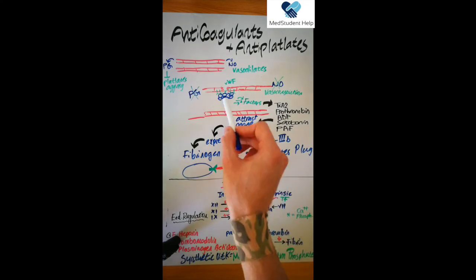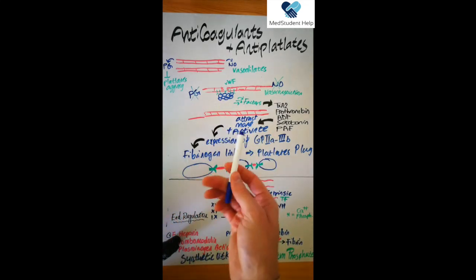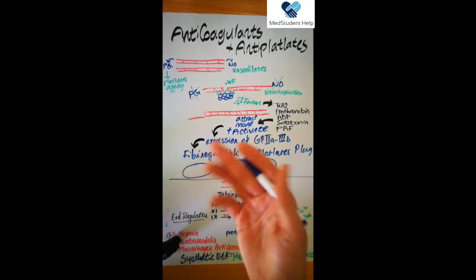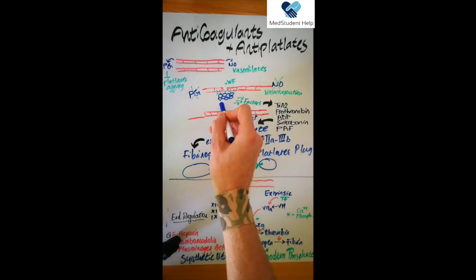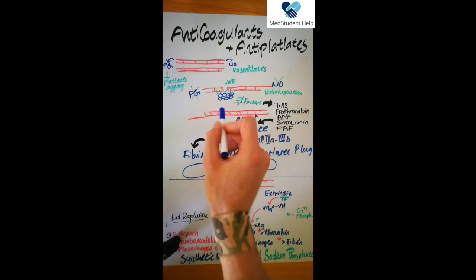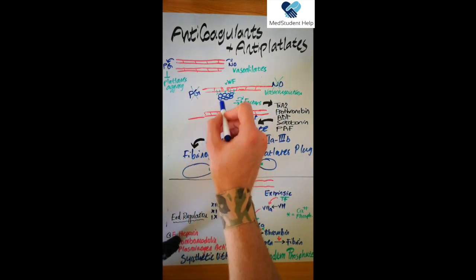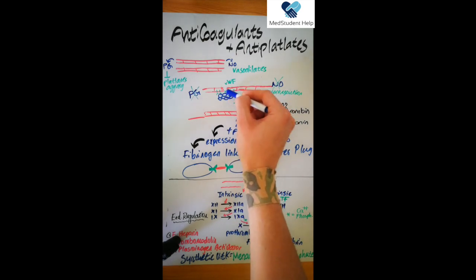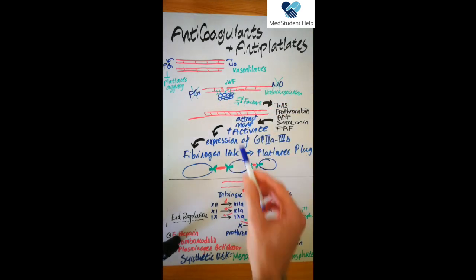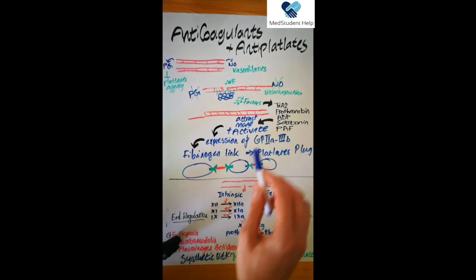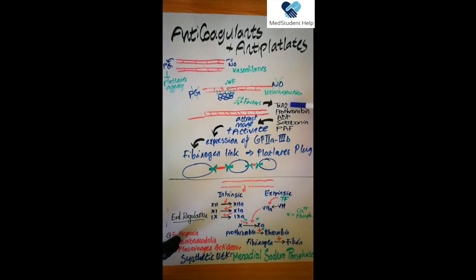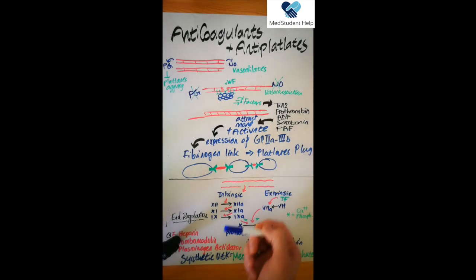Now when the platelets attach at the site of injury, they sense that there is a problem and they release factors. The platelets that have aggregated at the site of injury produce: thromboxane A2, prothrombin, ADP, serotonin, and platelet activating factors.